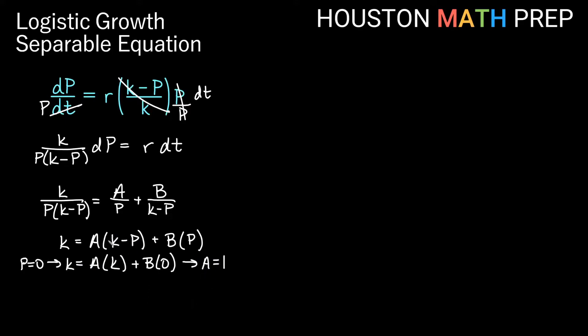And then how could I make this other factor zero maybe to solve for B? Well, I could plug in k for P. So let's try when P is k, what do we get? I would get k equals A times k minus k, so that would be zero there plus B times if P is k, then this becomes B times k. So we get k is equal to nothing here, B times k. So B must be one in this case. So we get A is one and B is one.